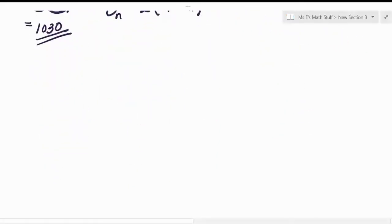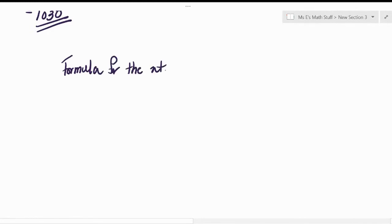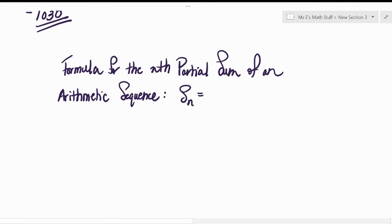So anyway, hopefully that makes sense, because you're going to need to have it memorized. So the formula for the nth partial sum of an arithmetic sequence. Notation for nth partial sum is S sub n, and then you take the number of terms and divide it by two, and then you multiply it by a sub one plus a sub n.